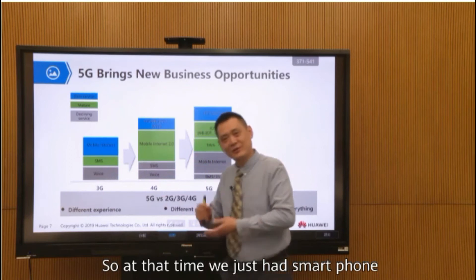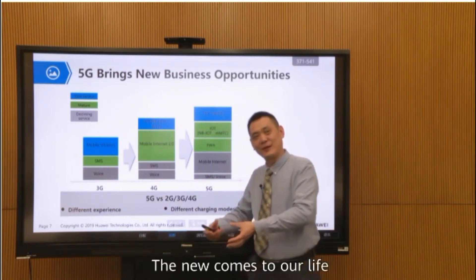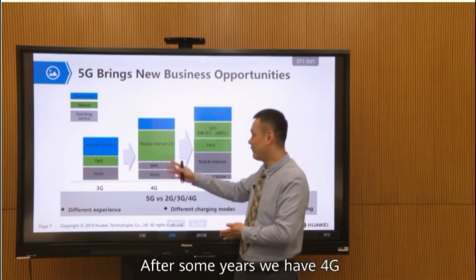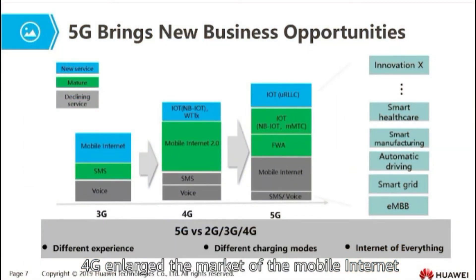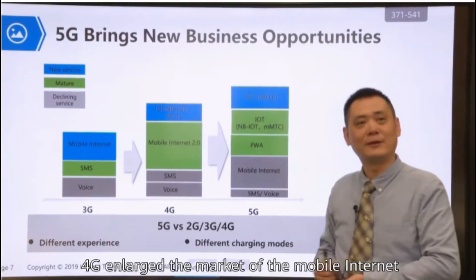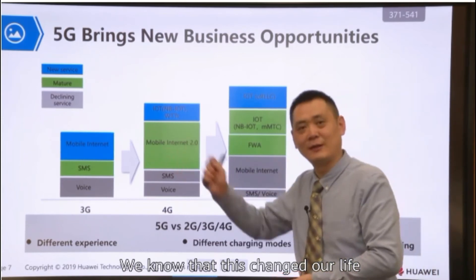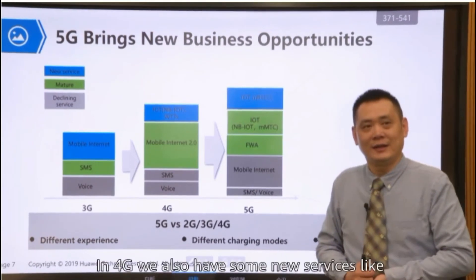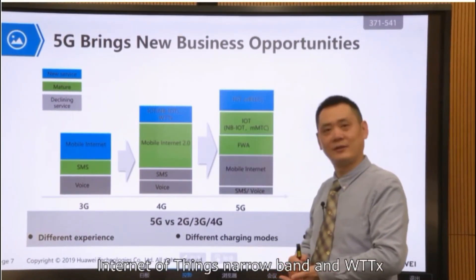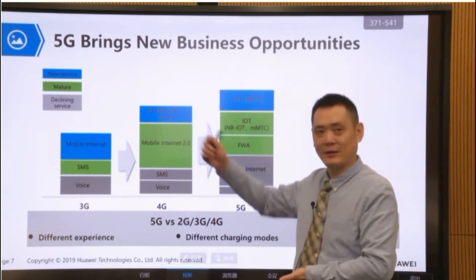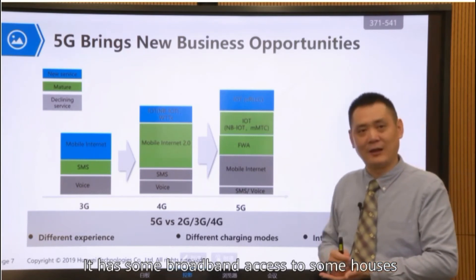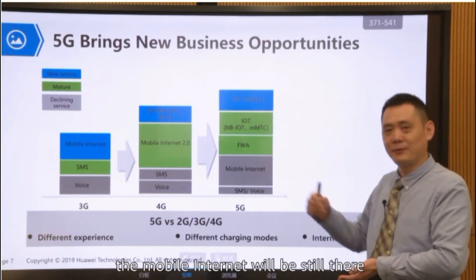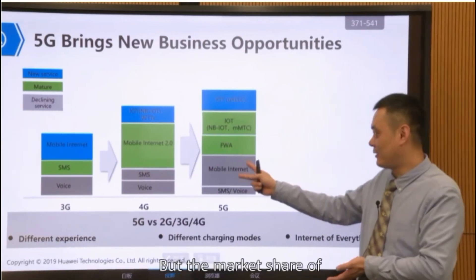At that time, we just got a smartphone — it was very new to our lives. That was the new service introduced by 3G. After some years, we had 4G, which enlarged the market of the mobile internet, and this changed our lives. We are now using smartphones every day and getting a lot of information from them. In 4G, we also got new services like internet of things and narrowband internet of things, and WTTx provided broadband access to some homes. In 5G, mobile internet will still be there and bandwidth will be enhanced, but the market share of mobile internet may reduce.